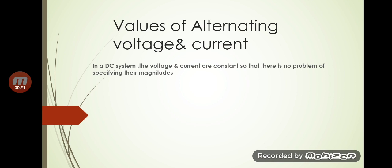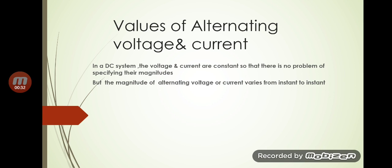In a DC system we know the voltage and current are constant because they are not varying with time, so there is no problem of specifying their magnitudes. But in the case of alternating quantities, we know its magnitude varies from instant to instant. So normally there are four different ways to express the magnitude of alternating quantities.